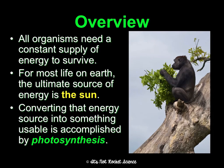Photosynthesis is where we convert energy from the sun into something actually usable. Usable for you as a human is ATP. In photosynthesis, we're taking it from the sun to glucose. Then in concept 5, we'll talk about how we take it from glucose to ATP. So one step at a time — this is the first step in that process of making energy usable.